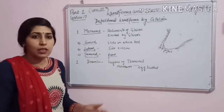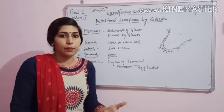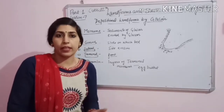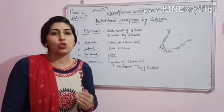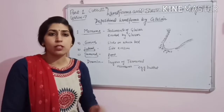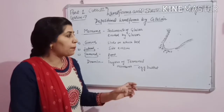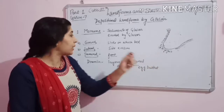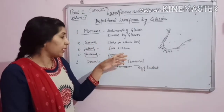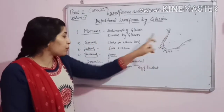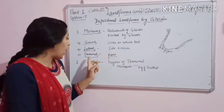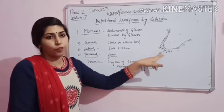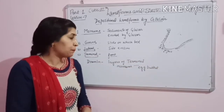So, moraines are the deposition of sediments which are carried by any glacier. The sediments the glacier brings along and deposits — where it deposits them on its own bed, that is the ground moraine; depositing on the side is the lateral moraine; and the terminal moraine is what is deposited in front.